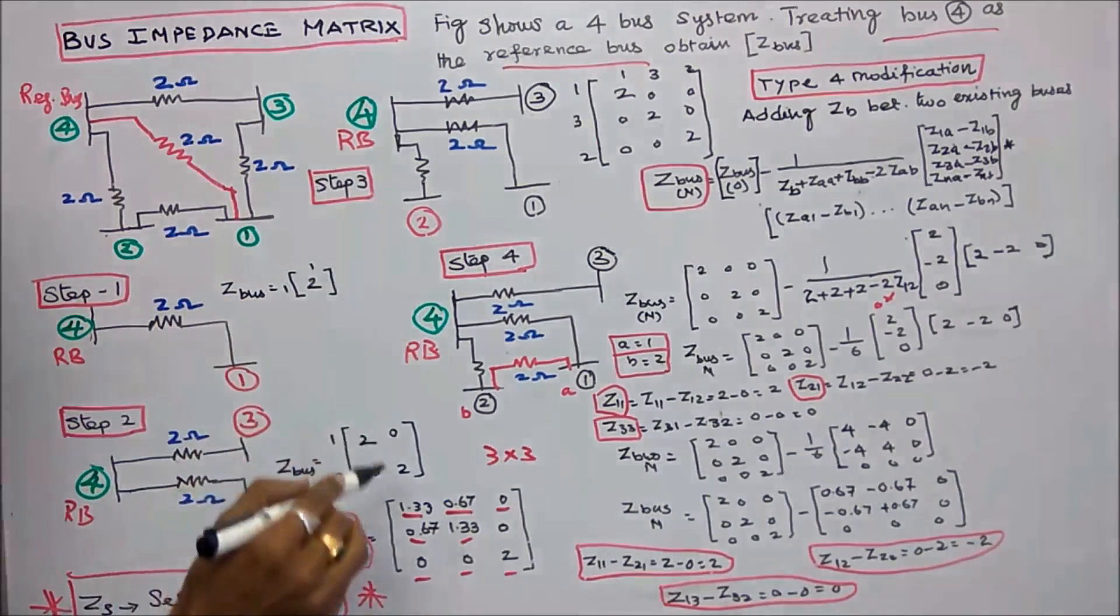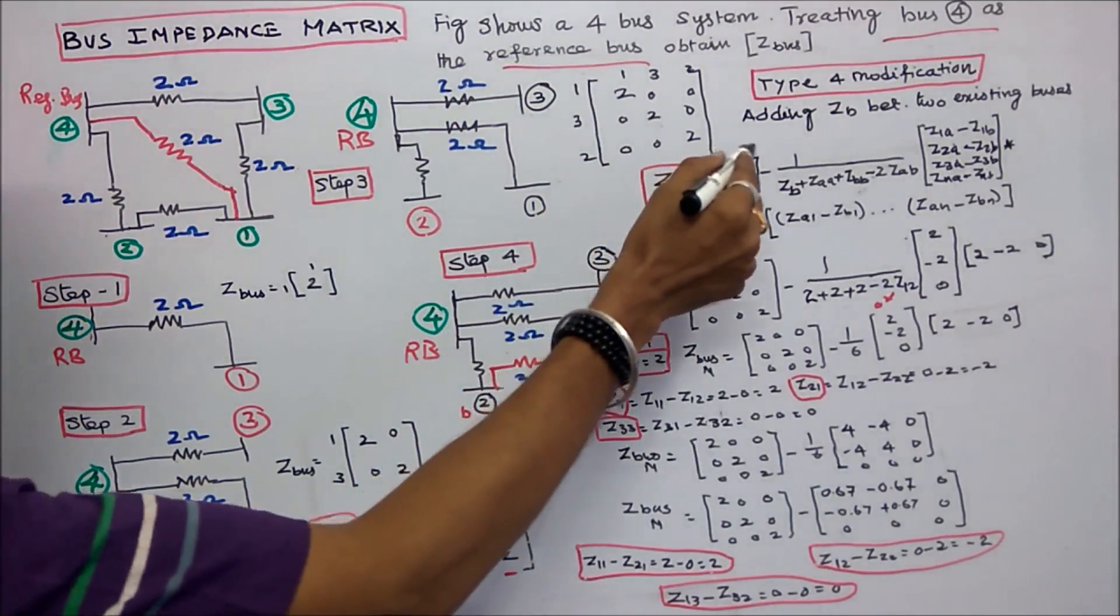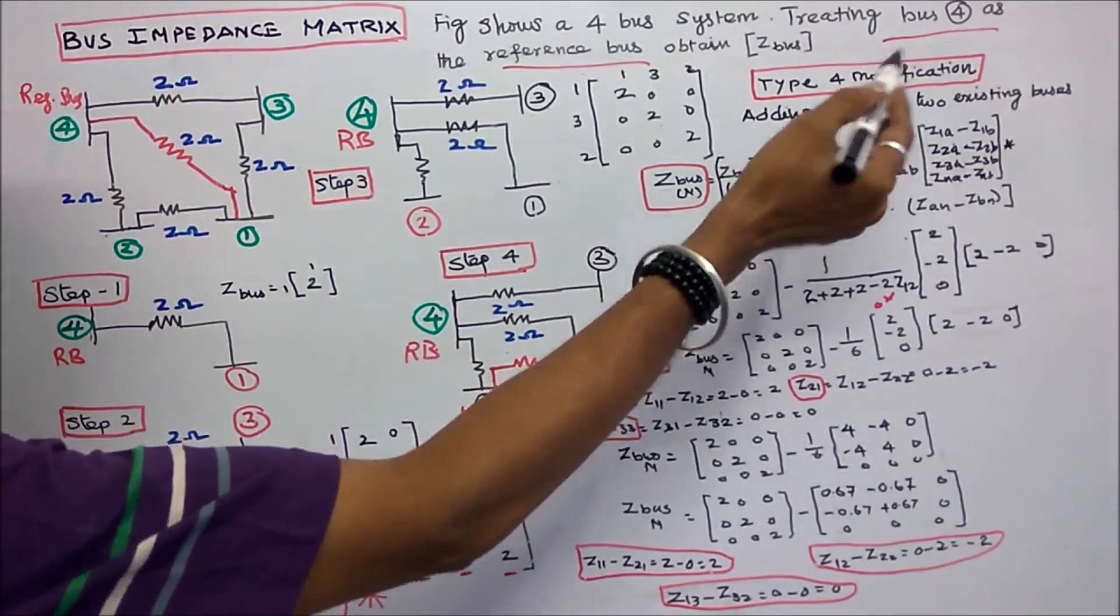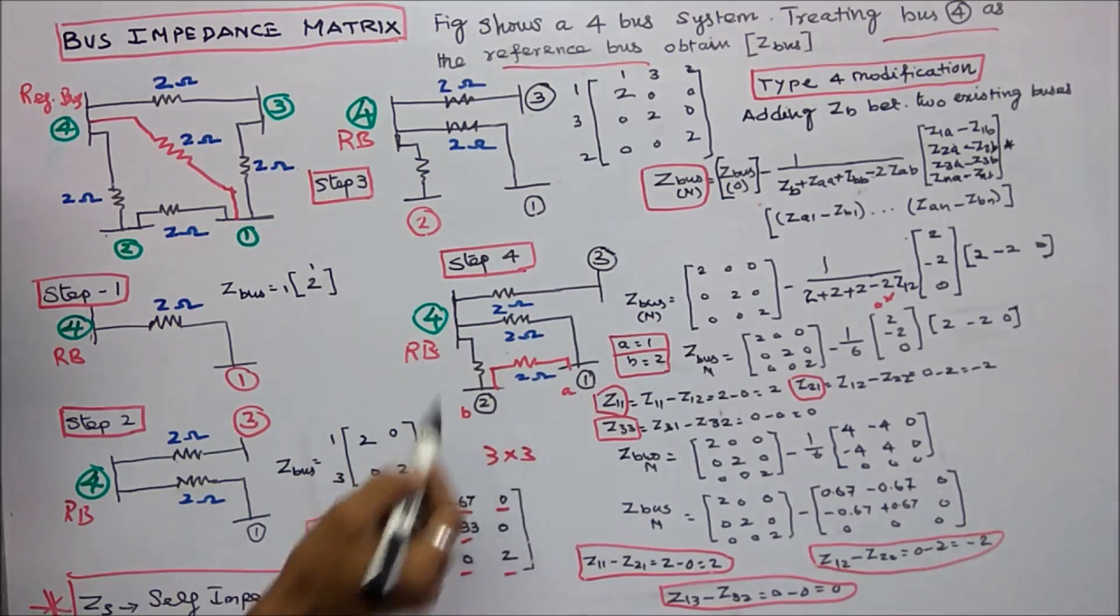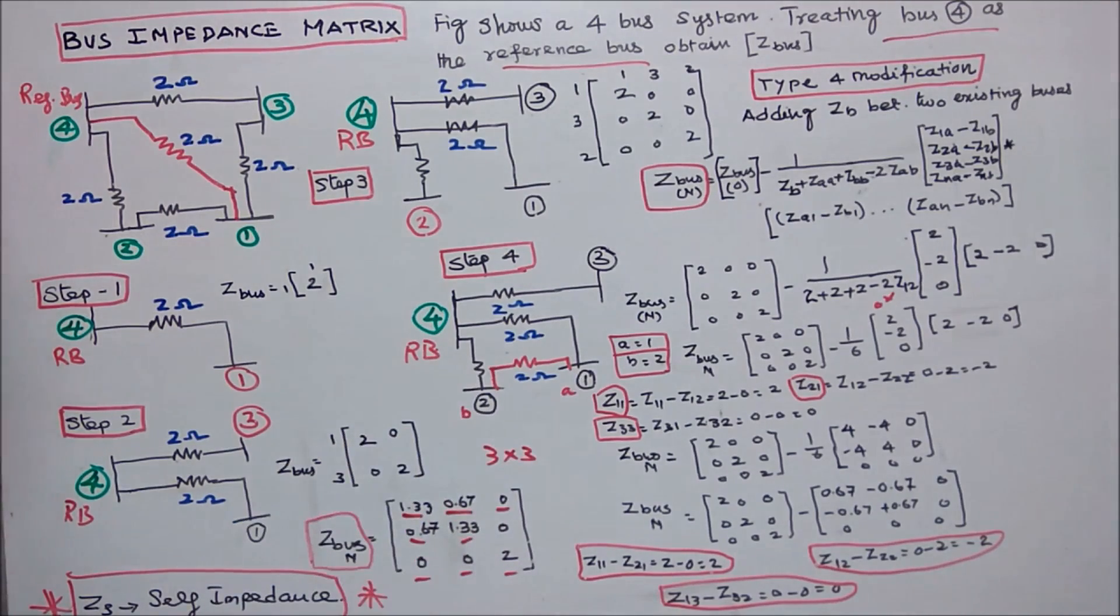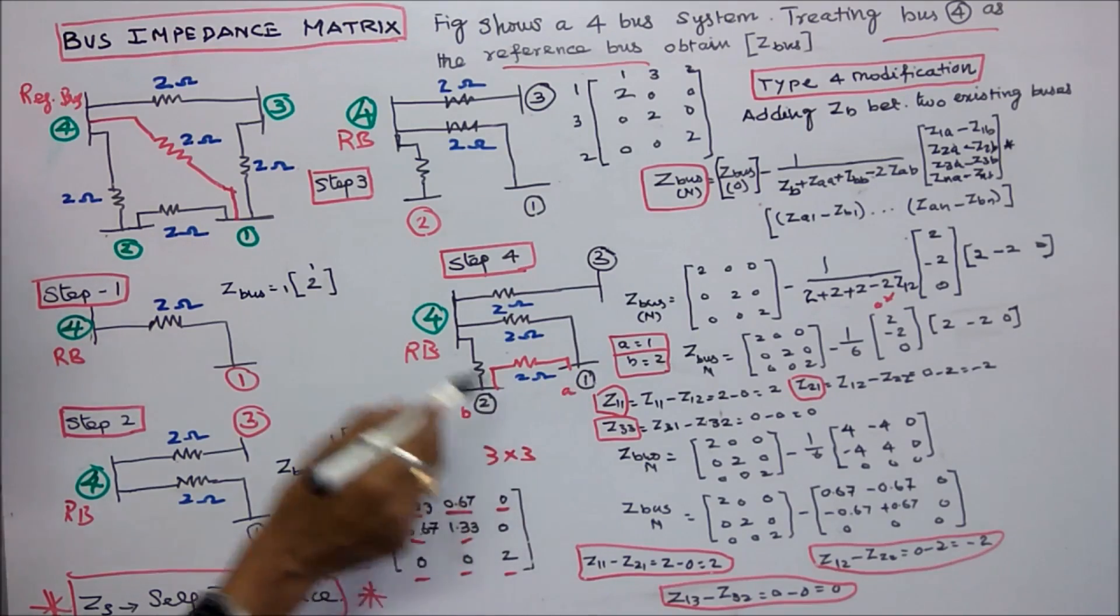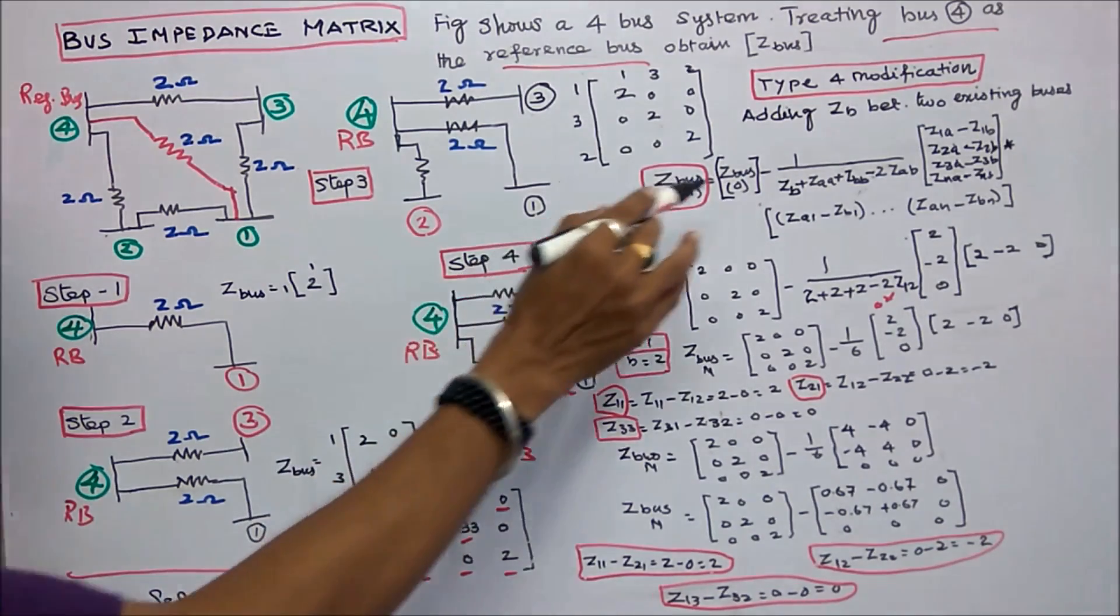Step 4 is a type 4 modification, adding ZB between 2 existing buses. Here the existing buses are 1 and 2. I am adding 2 ohms between 1 and 2. Here A is equal to 1, B is equal to 2. This is the formula.